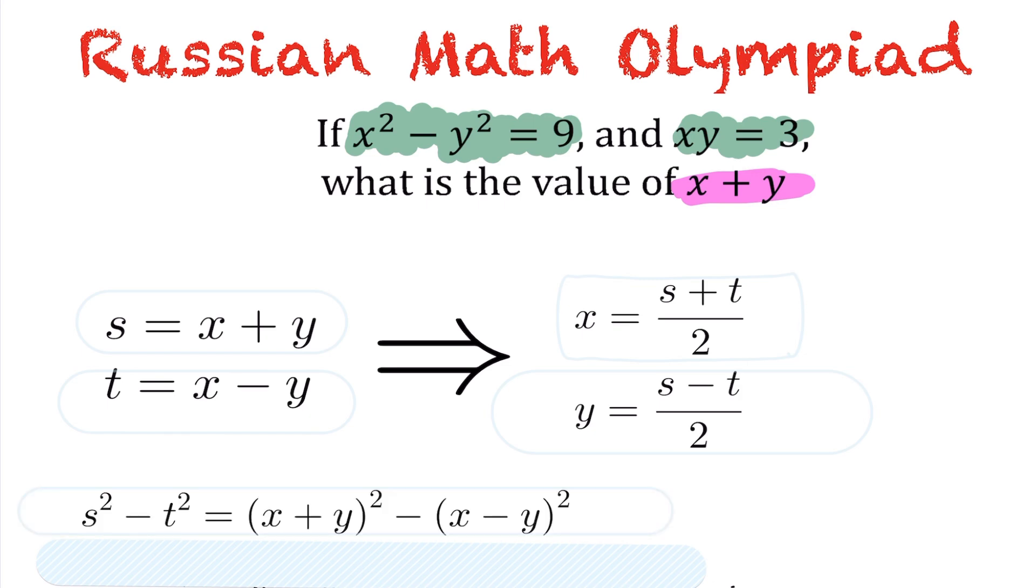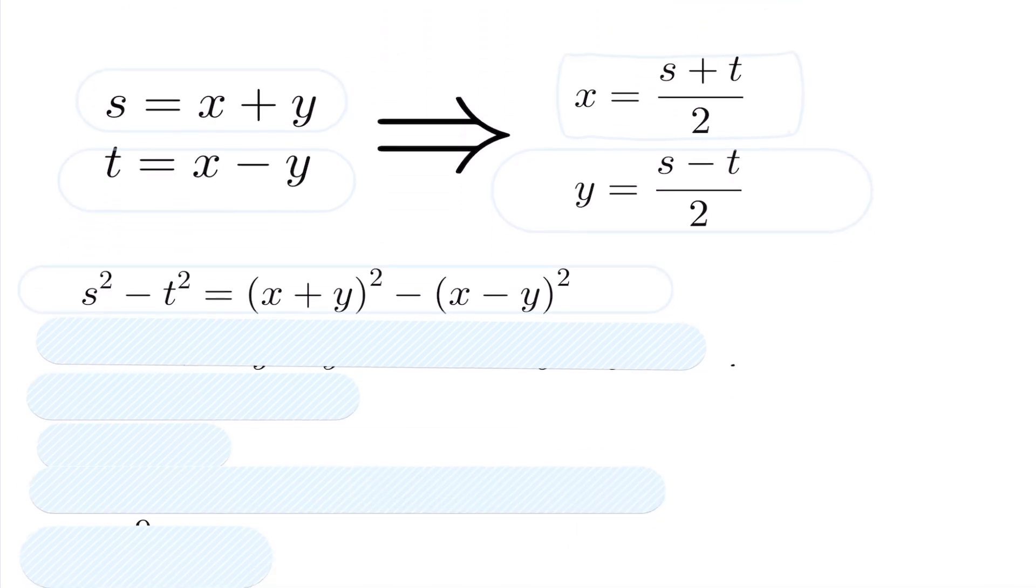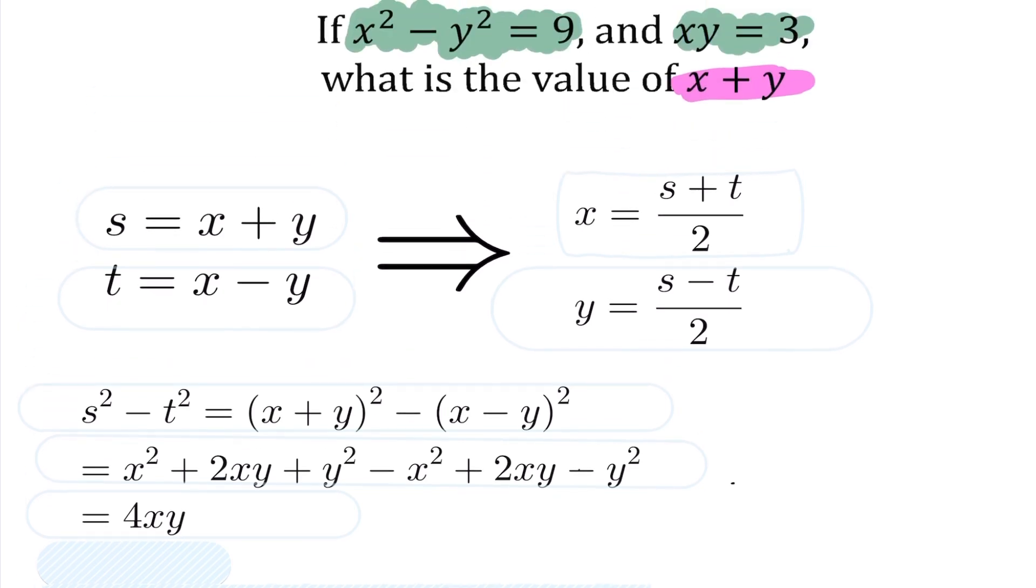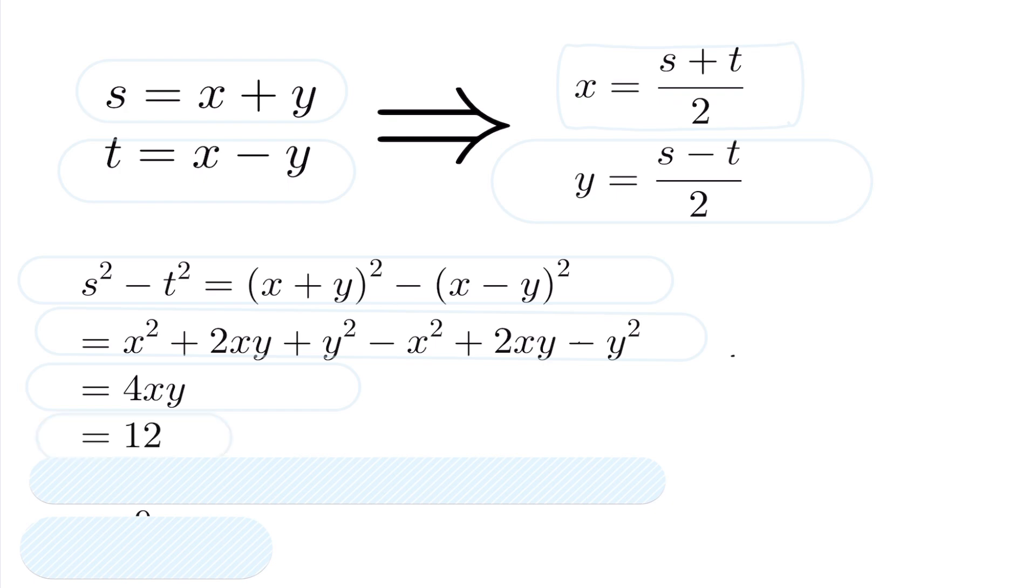I know that s squared minus t squared is, by definition, since s is in fact the sum of x and y, and t is the difference, I substitute those in. Expanding this all out and simplifying, you end up getting that it's just equal to 4xy. But again, we knew in the original question that x times y is 3, so therefore, I know that s squared minus t squared is 12.